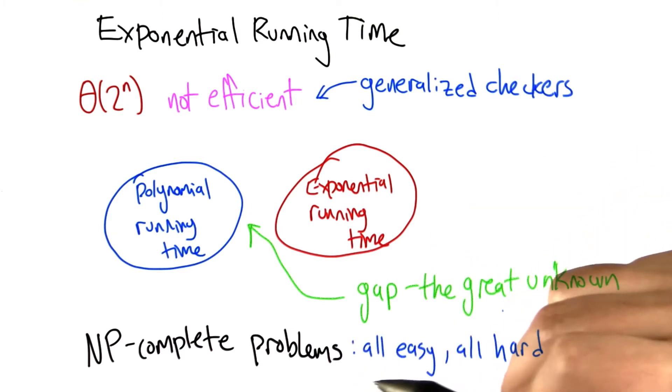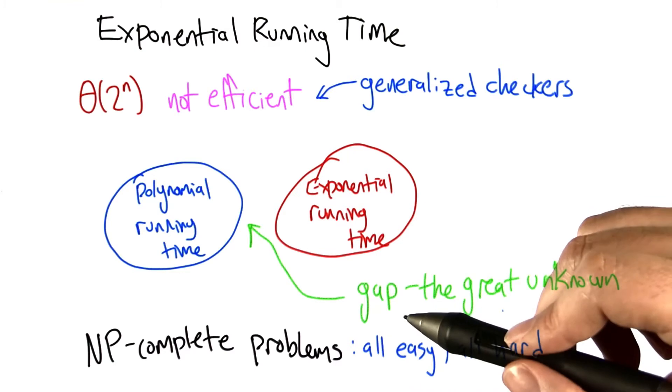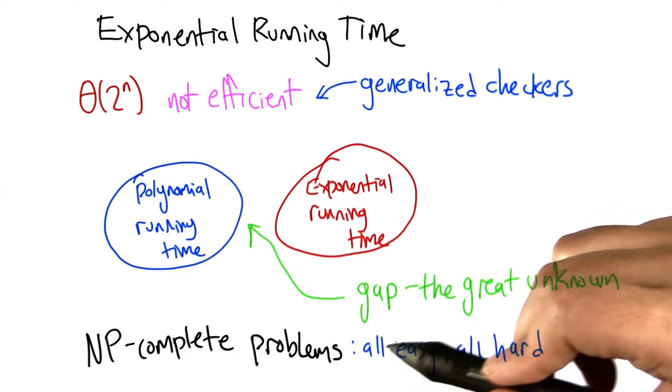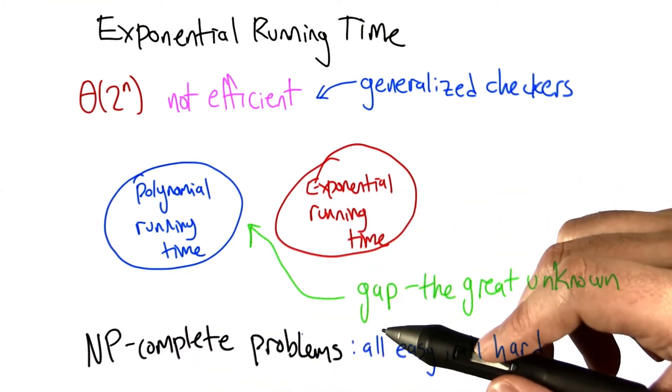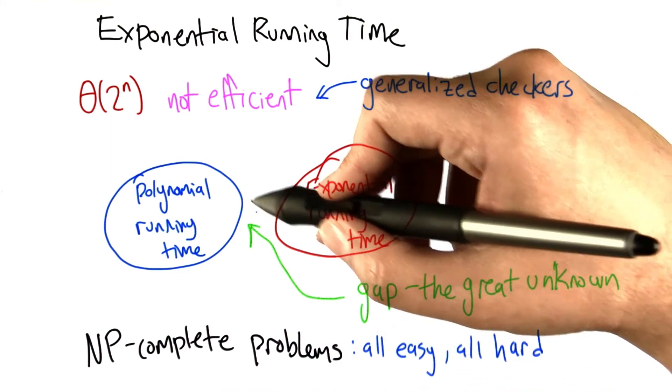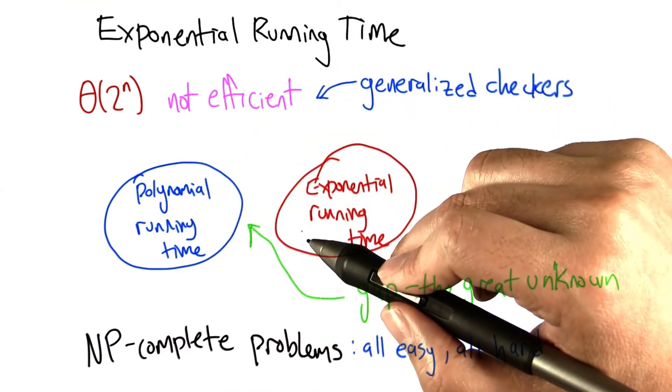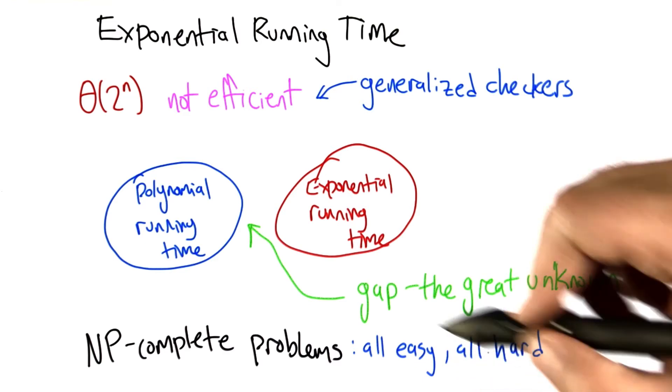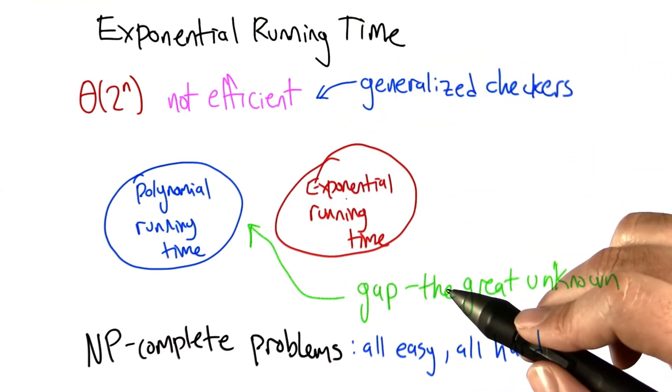And it's very frustrating that we don't know where these problems lie. But we do know something: for all the NP-complete problems, either they're all easy and fit in the polynomial running time class, or they're all hard and fit in the exponential time running class.